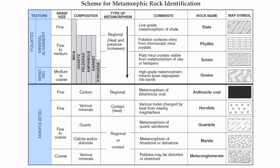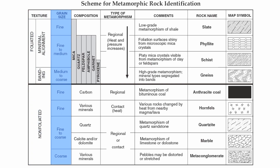First off, you have texture — foliated versus non-foliated. Foliated rocks can be either categorized as mineral alignment or banding. Next over, you have grain size or crystal size: small, medium, and large — fine being the smallest, coarse being the largest, in regards to the visual size of the crystals in the rock.